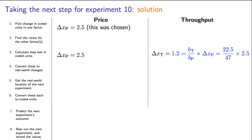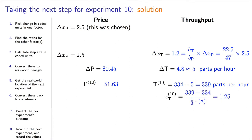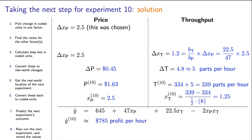So these are the values you should have obtained: delta xt equal to 1.2, delta T in real-world units is a change of 4.8 parts per hour and we'll round that up to 5, delta p is 0.45 or 45 cents. T for the 10th experiment corresponds to 339 parts an hour and p is $1.63. Xt in coded units is 1.25, just a little bit different from the 1.2 that we had calculated earlier due to rounding, and xp equals 2.5. Using those coded values, we can predict a y value for the 10th experiment of $784.77 or 785.